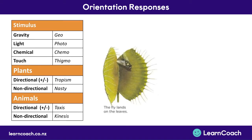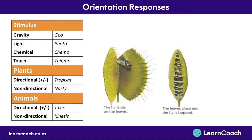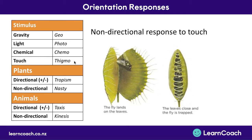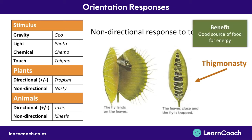Another nastic response: if a fly lands on a Venus flytrap and touches it, the plant closes and traps the fly, then digests it. This is a non-directional response to touch. The prefix for touch is 'thigmo' and a non-directional plant response is 'nasty', so we call this thigmonasty. Again, no positive or negative because it's non-directional. The benefit for the Venus flytrap is that it's a good source of food for energy.